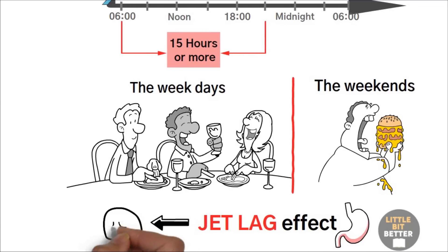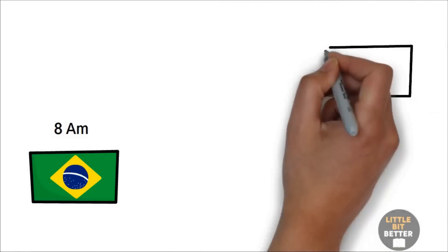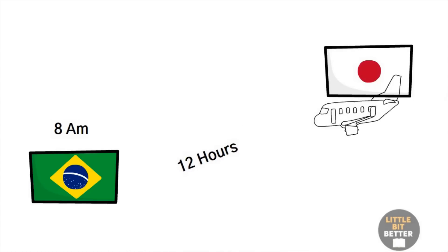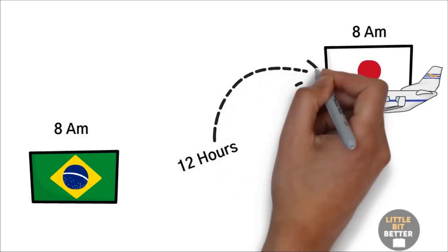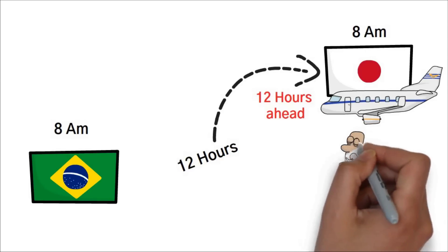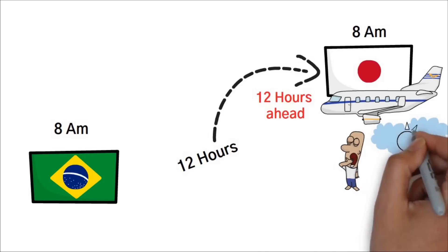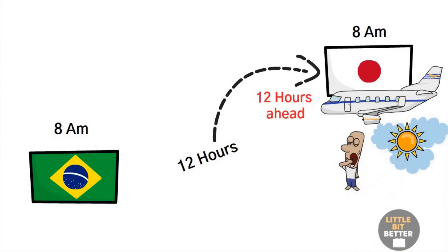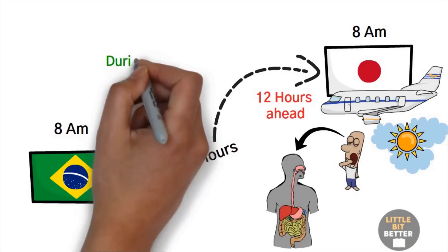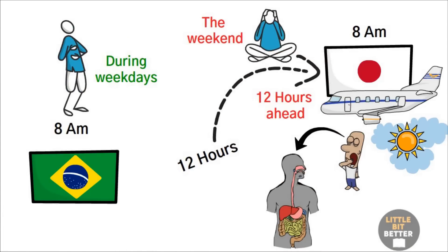You probably know how jet lag ruins your sleep, right? For example, if you travel from Brazil at 8 a.m. to Japan and the flight lasts, let's say, 12 hours, then by the time you land in Japan, it will still be 8 a.m. because Japan is 12 hours ahead of Brazil. So as you leave the plane, your brain is expecting to find a dark environment to go to sleep, but instead finds a very bright sky. A similar thing happens to your digestive organs when you eat at random times. During weekdays, your body feels like you're in Brazil, and during the weekend, it feels like you've traveled to Japan for a vacation.